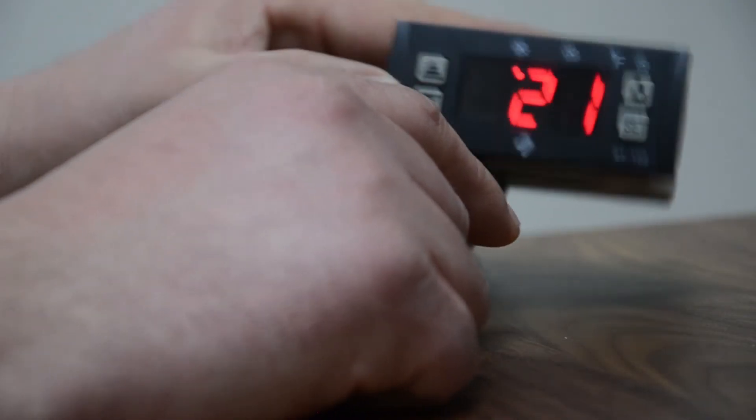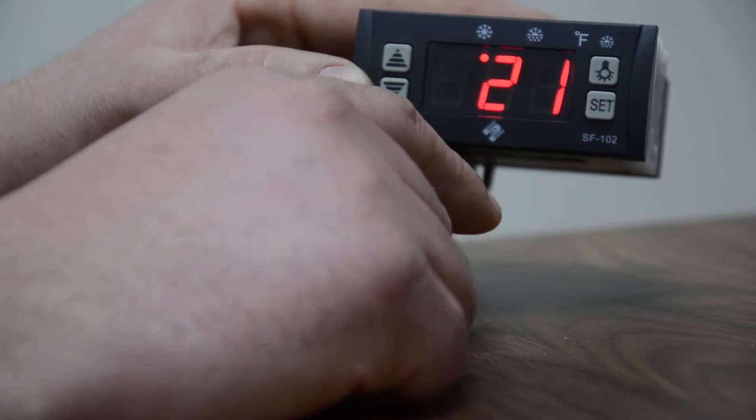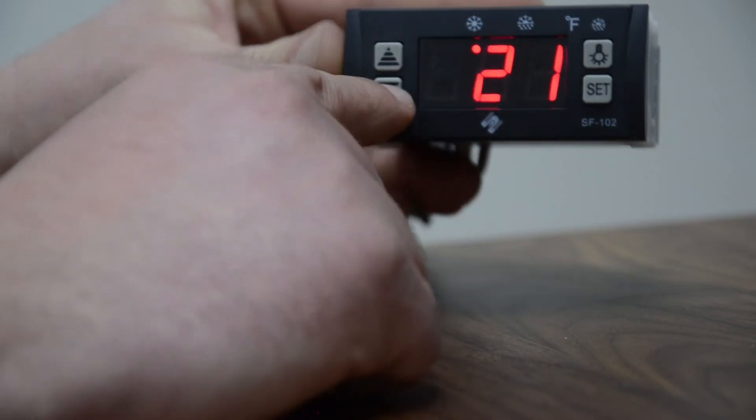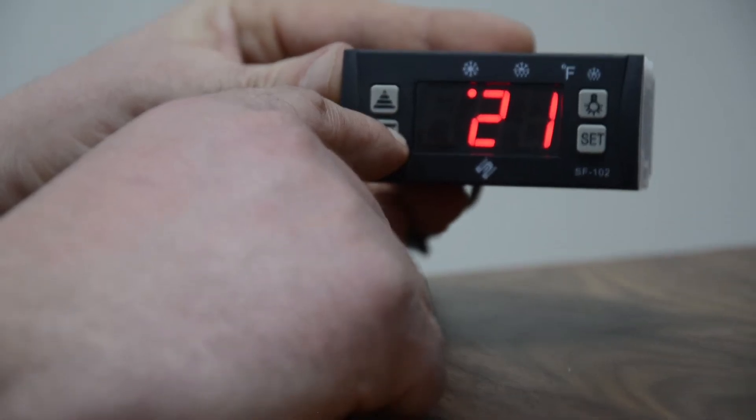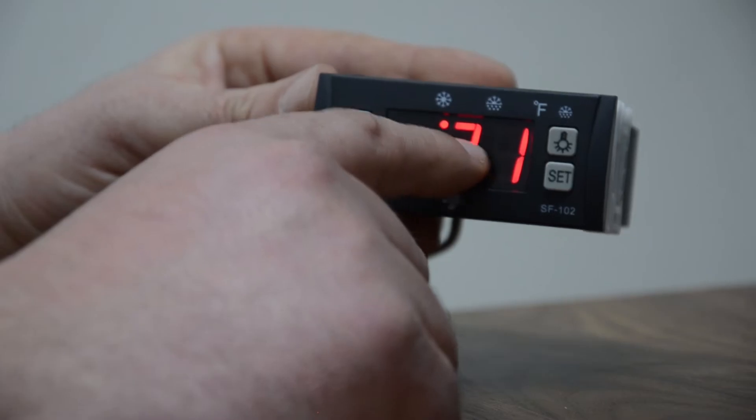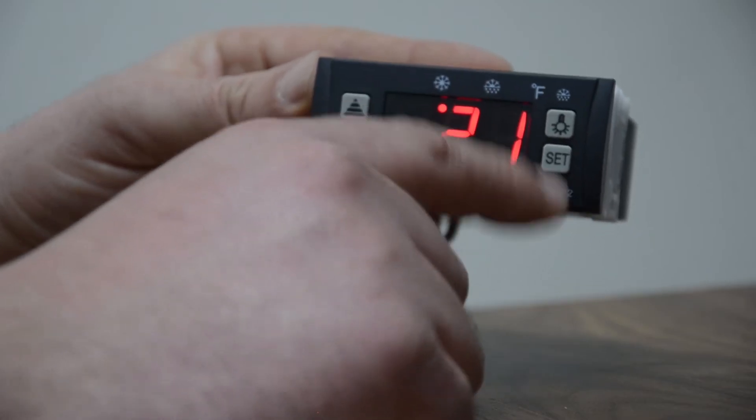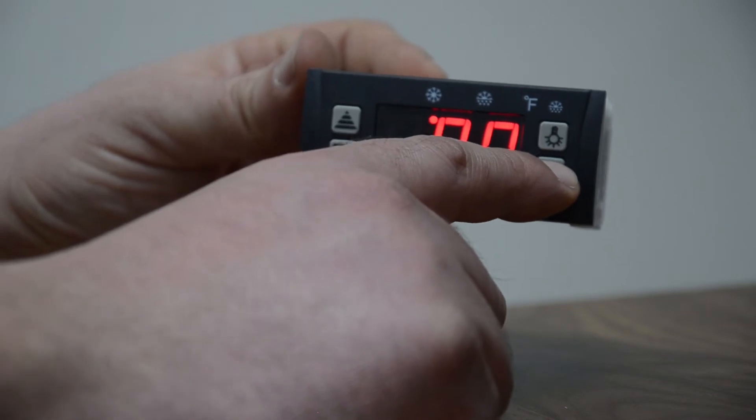Now we need to get into the parameters within this controller itself. What you would have to do is press the arrow down button and hold it for five seconds, and you would see the on display appear on the screen. Then to get into the parameters, you have to press and hold the set button for five seconds.